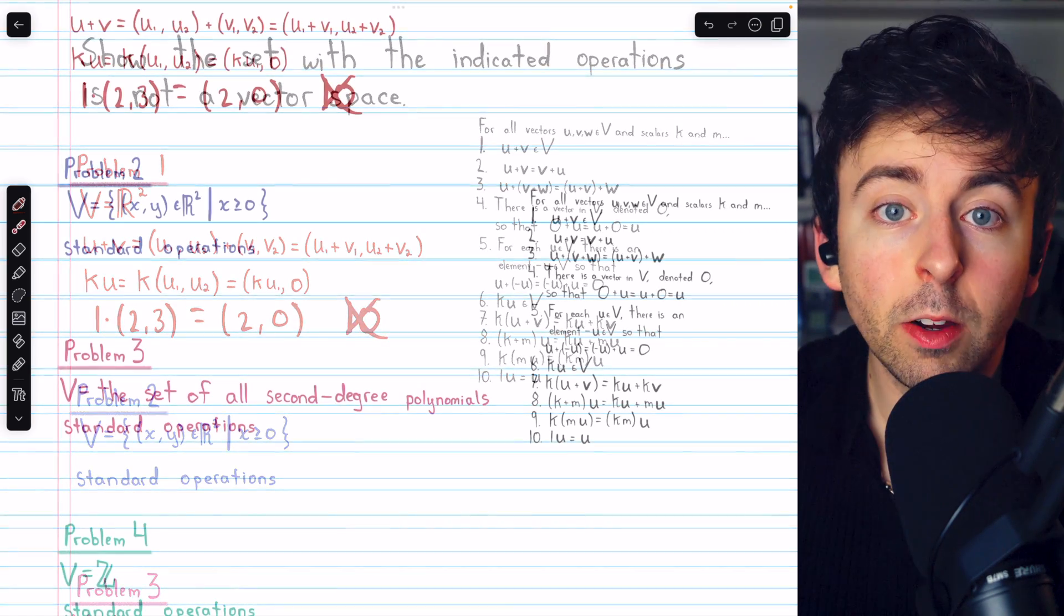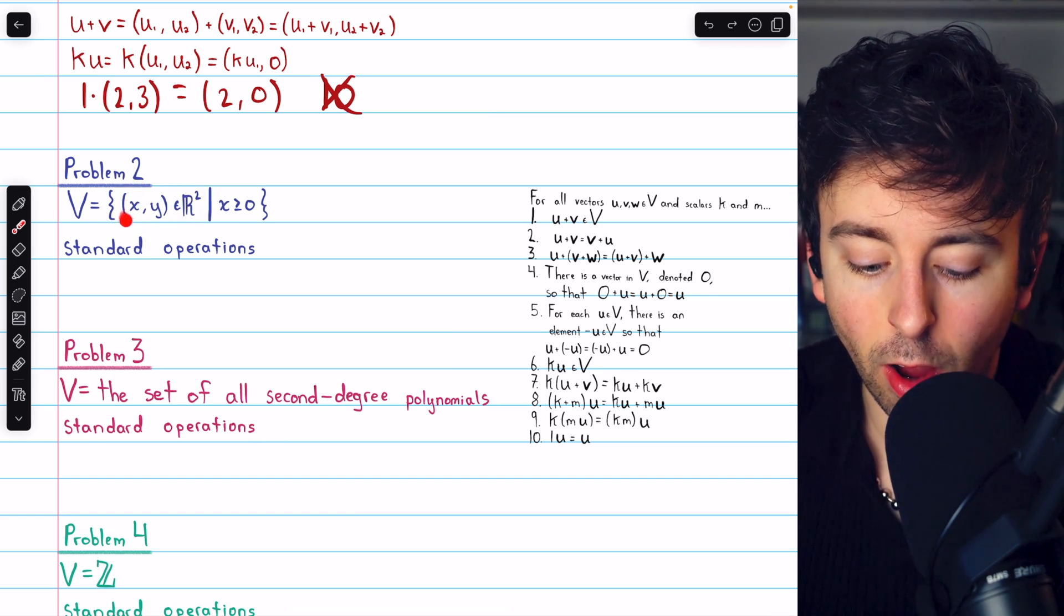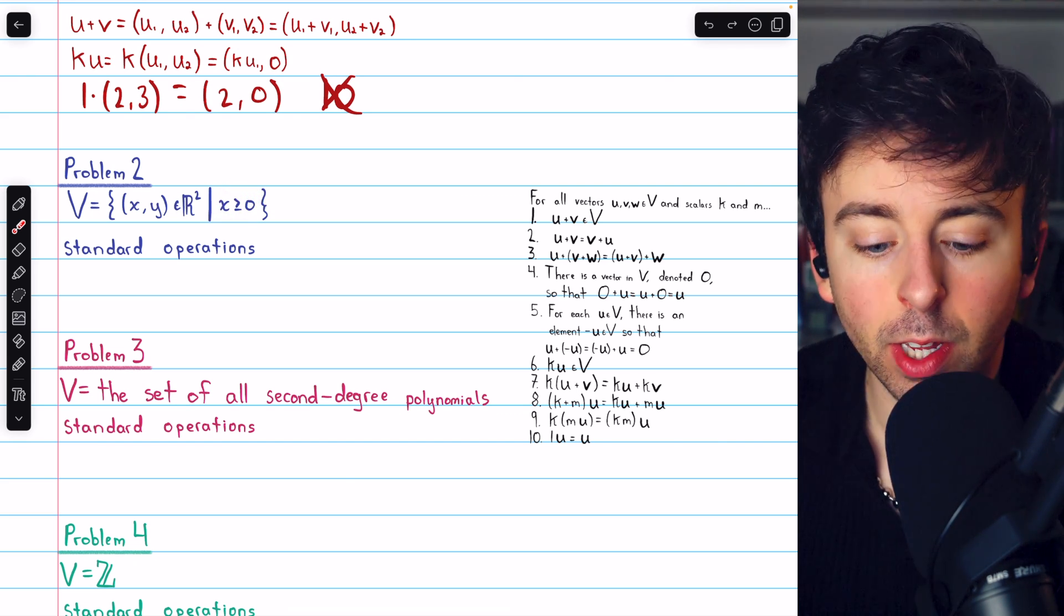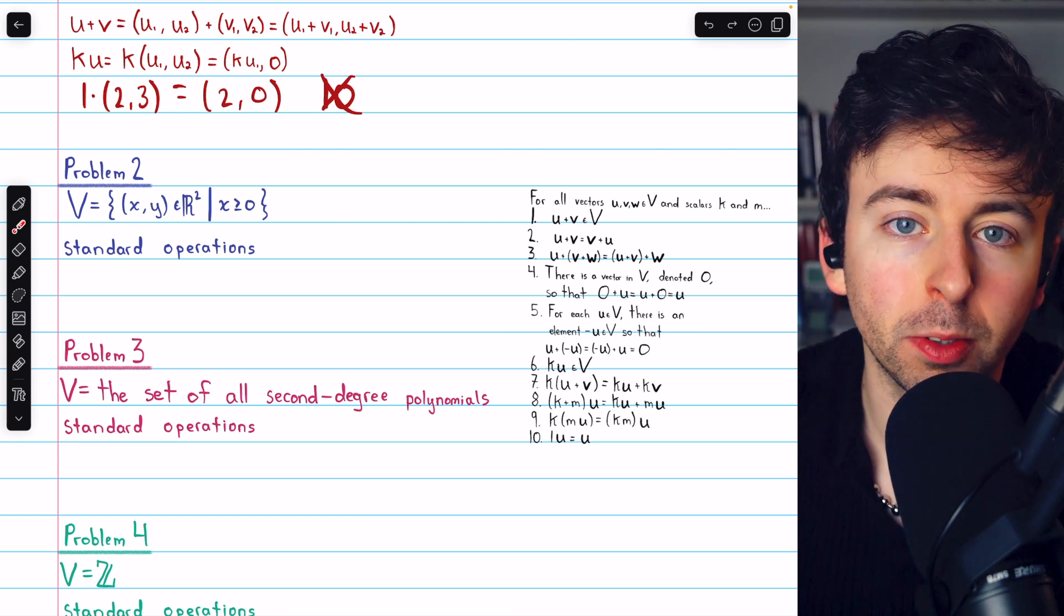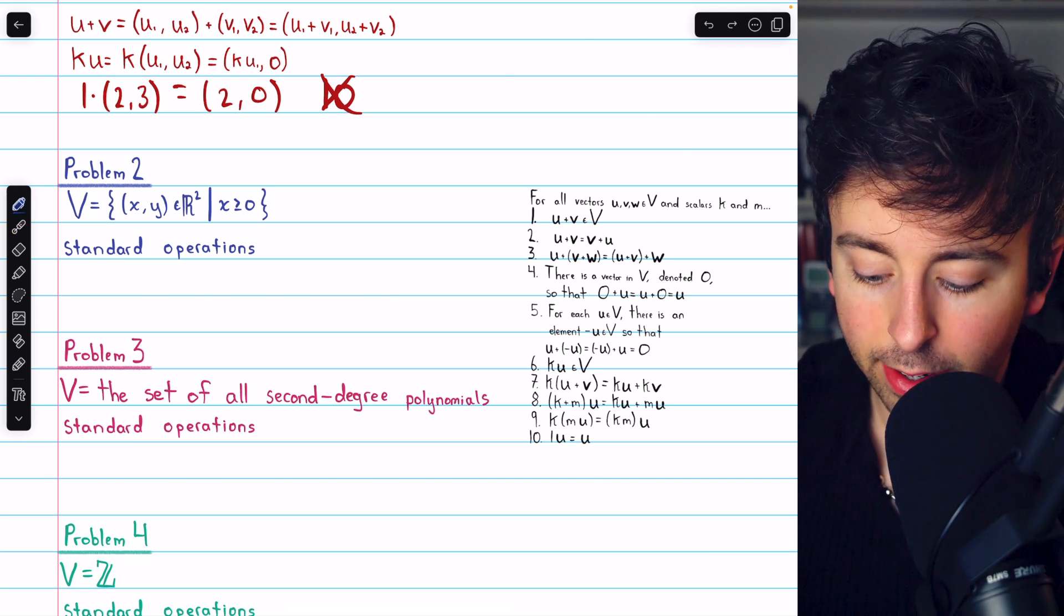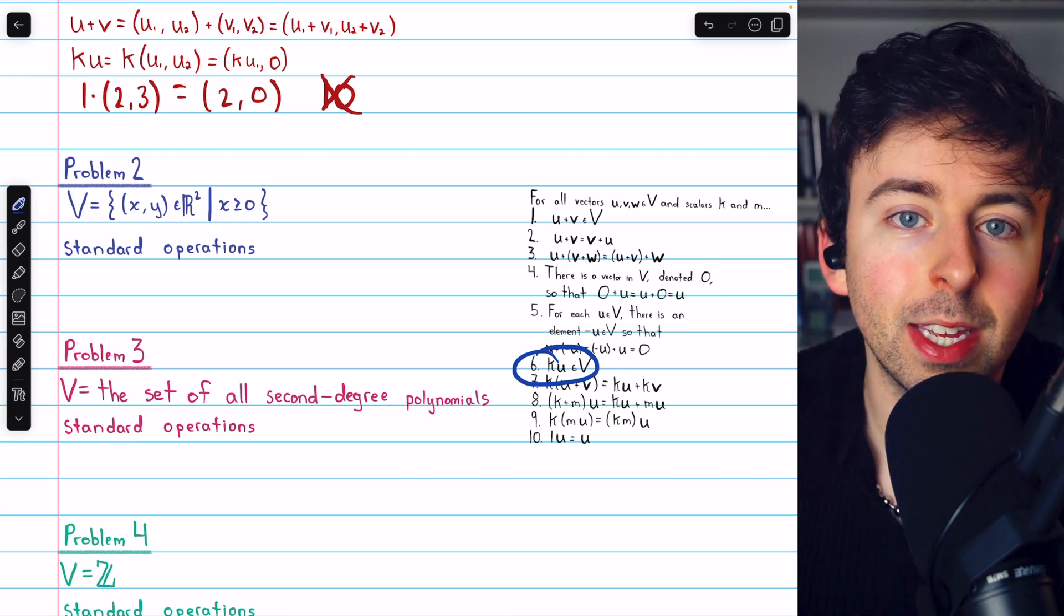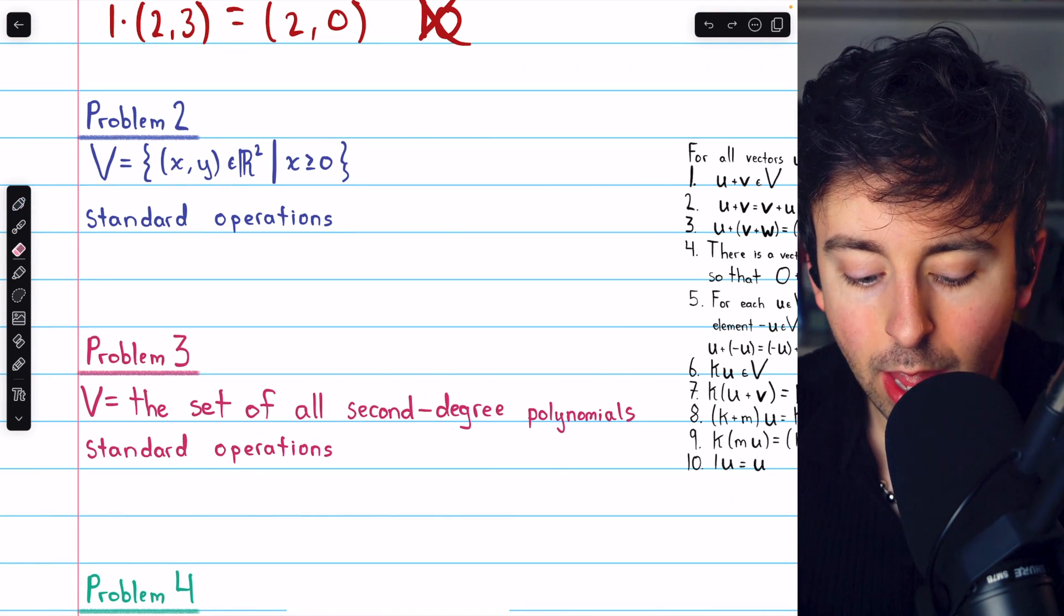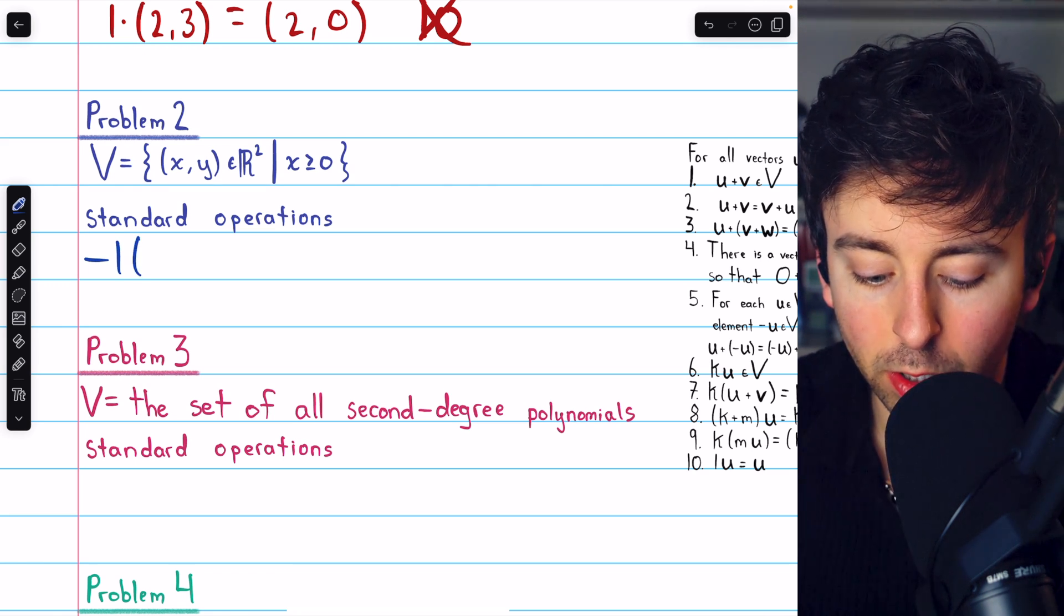This is not a vector space. Here in problem 2, we have a subset of R squared. This set contains all ordered pairs (x, y), where x has to be non-negative. The operations are standard, so the standard vector addition and standard scalar multiplication. Again though, the scalars are going to cause a problem here. Axiom 6 says that any scalar multiplied by any vector must also be in the set. However, that's not going to be satisfied in this space. For example, if we take the scalar negative 1 and multiply it by the vector (2, 2),